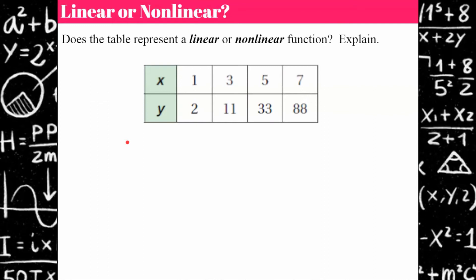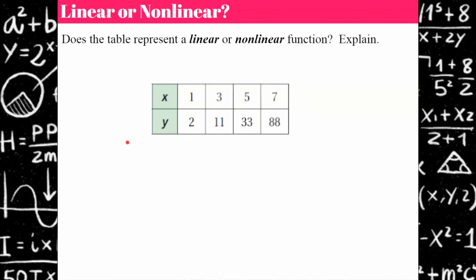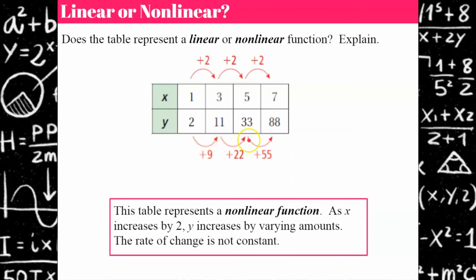Your turn again. Does this table represent a linear or non-linear function? Let's check for a constant rate of change. As x is increasing by 2, y is increasing by varying amounts: plus 9, plus 22, plus 55. Therefore, this table represents a non-linear function, because as x is increasing by 2, y increases by varying amounts, so our rate of change is not constant. If you graphed this, the graph would not be a line.